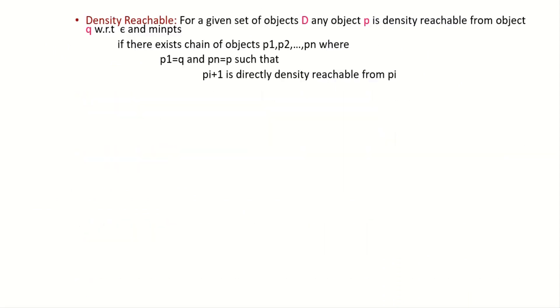The next key term is density reachable. For a given set of objects D, any object P is density reachable from object Q with respect to epsilon and minimum points if there exists a chain of objects P1, P2, Pn where P1 equals Q and Pn equals P, such that P of i plus 1 is directly density reachable from P of i. Let's have a look at the example.